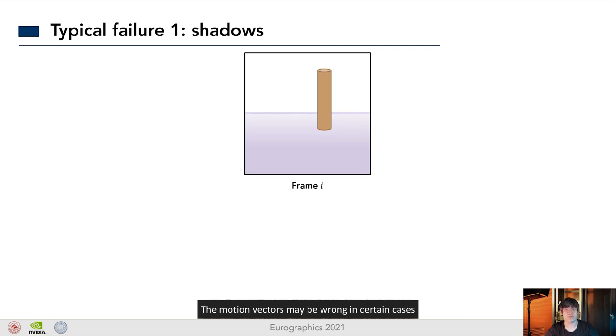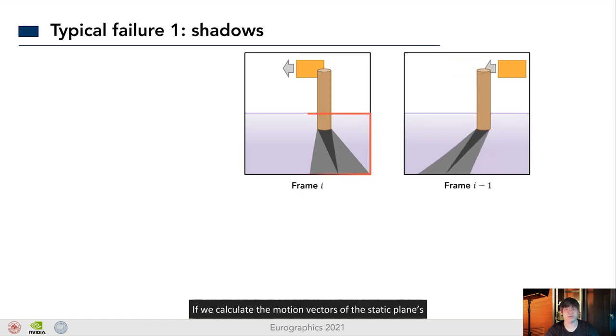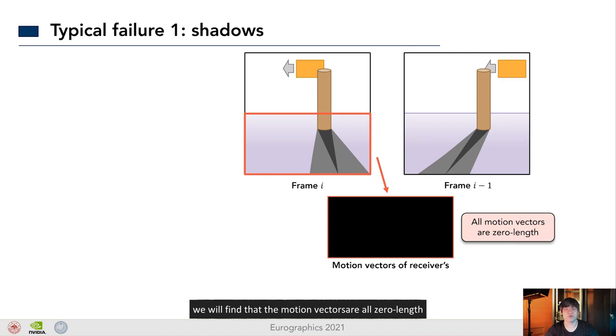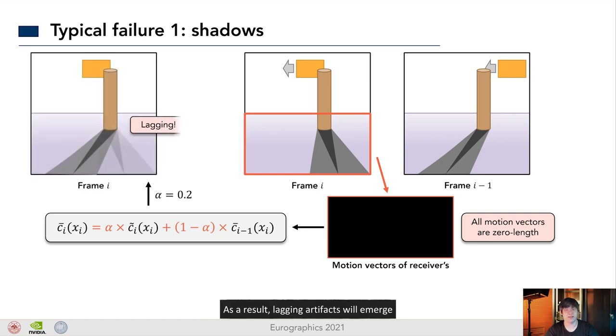The first typical failure is the shadows. Here, we have a static plane with a static calendar standing on it. Now, there is an aerial light source moving to the left, while casting shadows onto the plane. Let's rewind the time to the last frame. If we calculate the motion vector of the static planes, we will find that the motion vectors are all zero length, since the geometry is static. In this case, if the temporal filtering is applied anyway, it will simply blend the pixels on the two planes. As a result, lagging artifact will emerge.